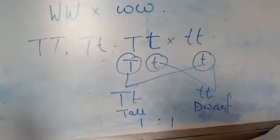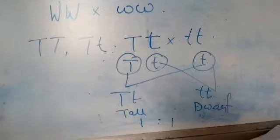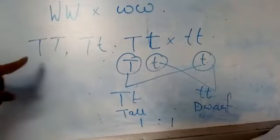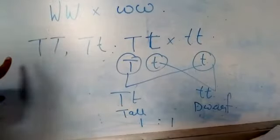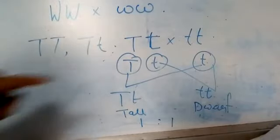Mendel crossed the dominant character plants. For example, tall plants and dwarf plants. Tall plants were having the dominant character — the allele responsible for tallness was dominant. So, the dominant character, in this case the tall plant, can have two different genotypes.